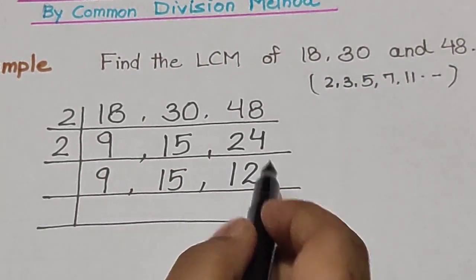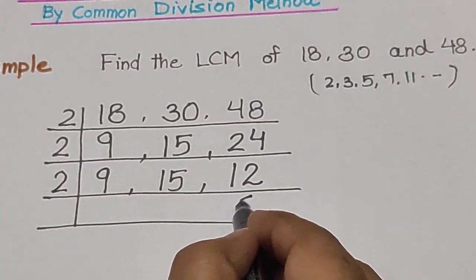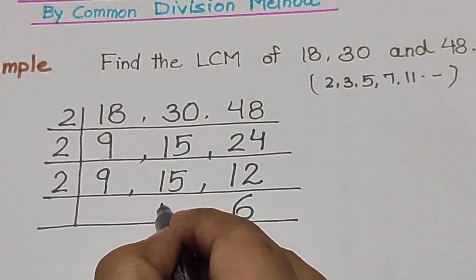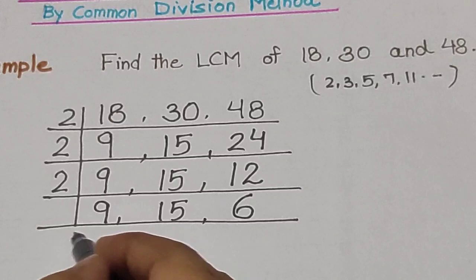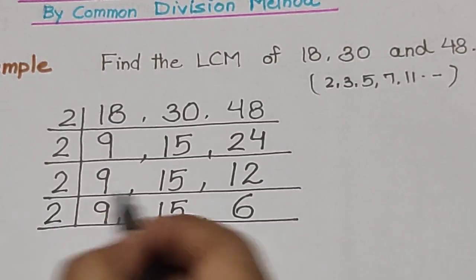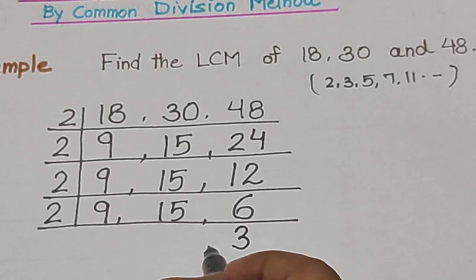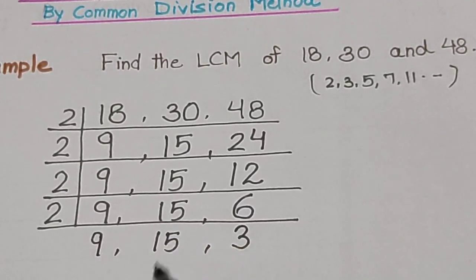After that, now 12 will be divided by 2. So 2 times 6 is 12. But 15 and 9 will be written as it is. After that, now 6 will be divided by 2. 2 times 3 is 6. And 15 and 9 will be written as it is.